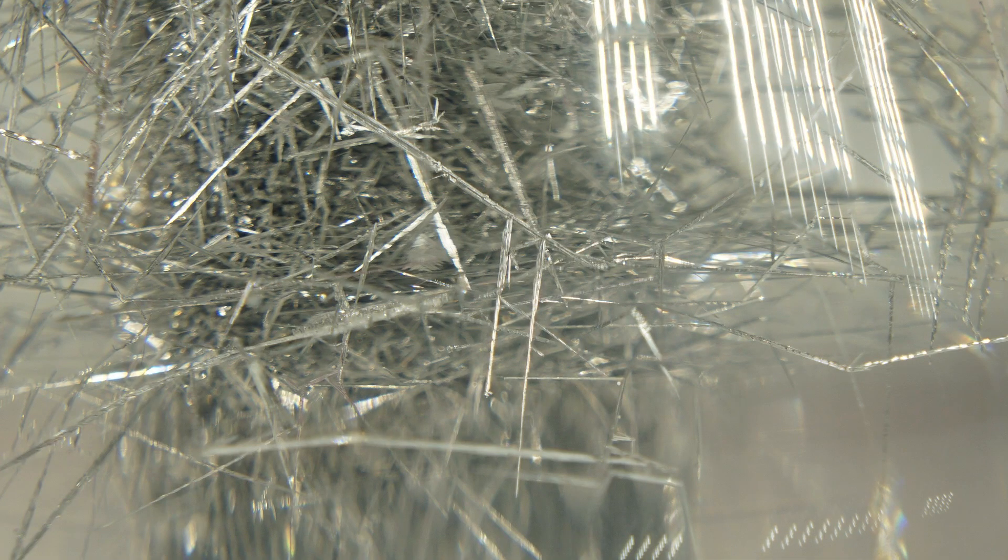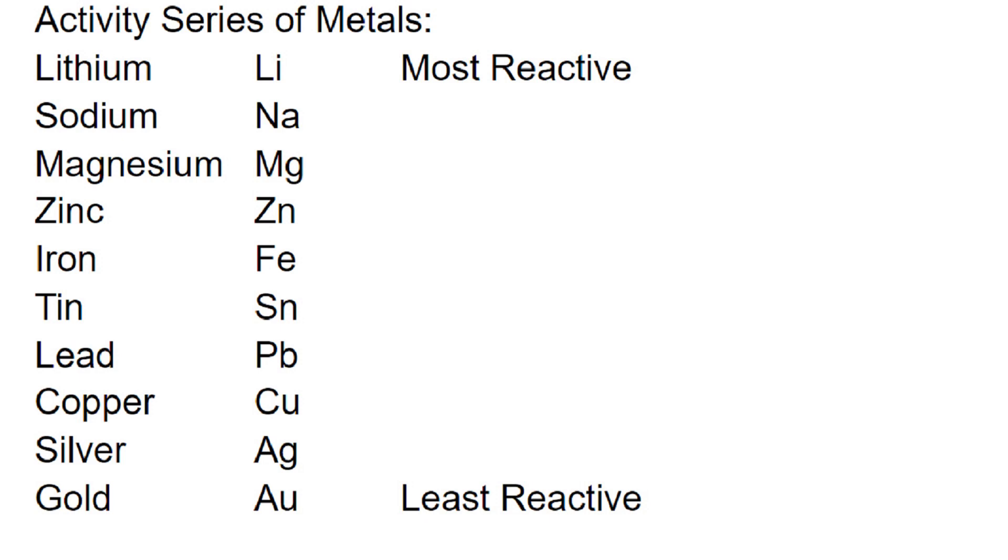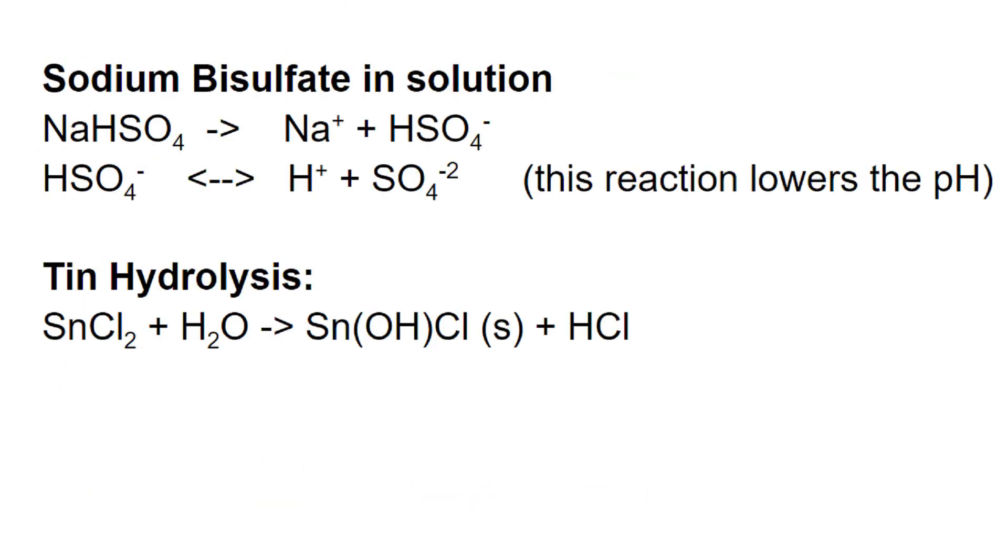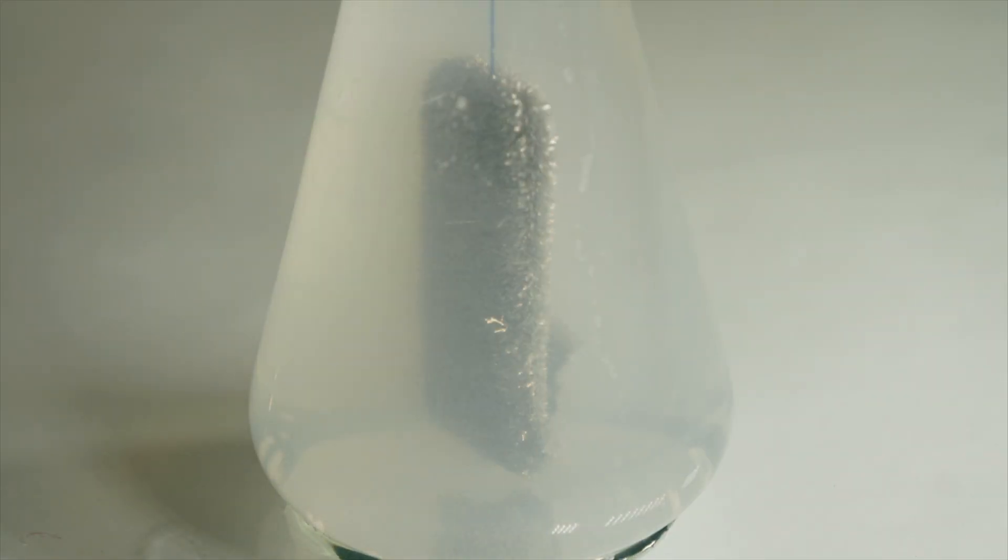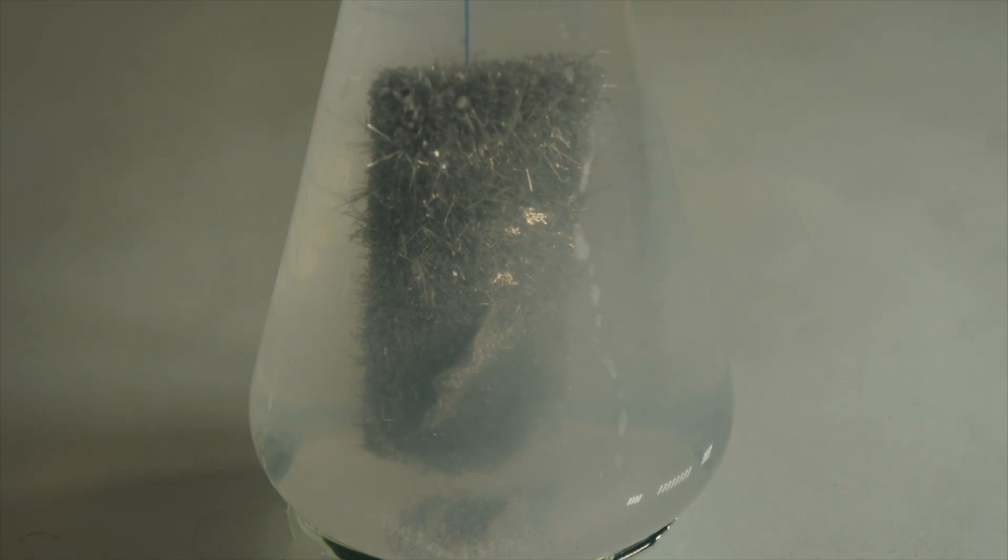Tin is below zinc in the activity series of metals, and zinc easily reduces the tin ions to elemental tin. The sodium bisulfate helps to maintain an acidic environment, which prevents the tin chloride from hydrolyzing and forming a precipitate of tin hydroxychloride. By the way, the Latin name for tin is stanum, which is why the atomic symbol for tin is Sn.